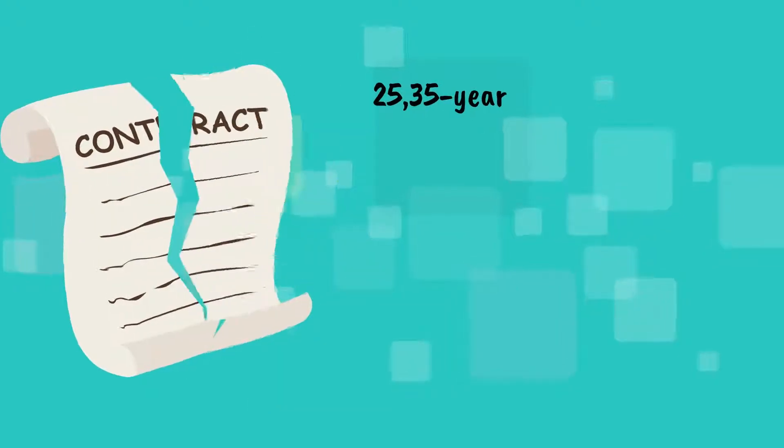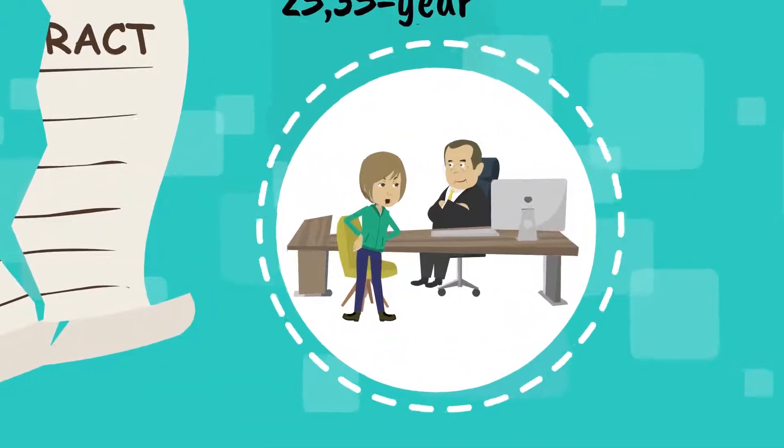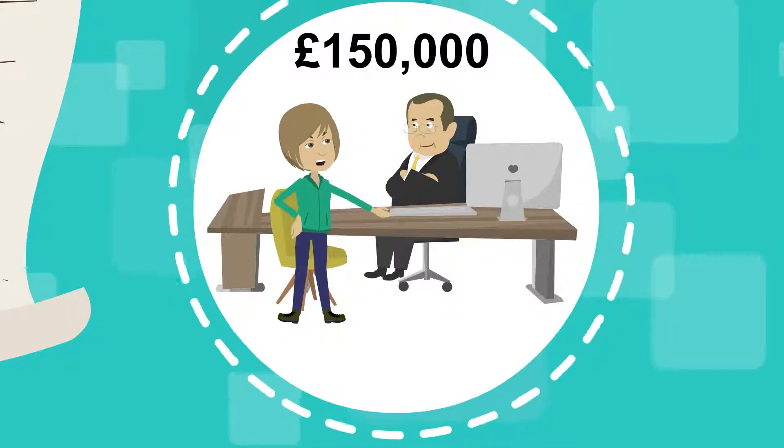Whether it is a current active mortgage agreement over a standard 25-35 year term, or even an inactive mortgage, we are finding, astonishingly, claimants are owed as much as £150,000 due to miscalculation.